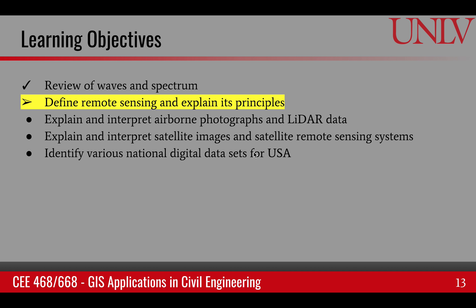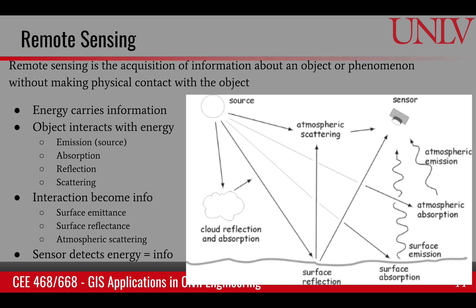This learning objective explains remote sensing and its principles. Remote sensing is the acquisition of information about an object or phenomena without making physical contact with the object. In this technique, energy carries information. The energy interacts with the object and there are several processes through which the interaction can happen.